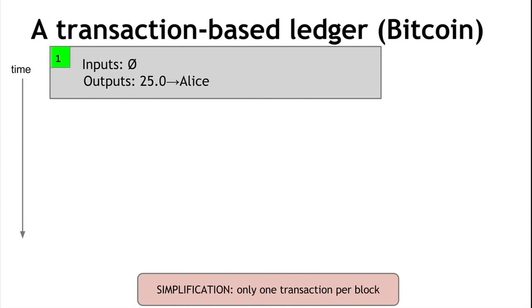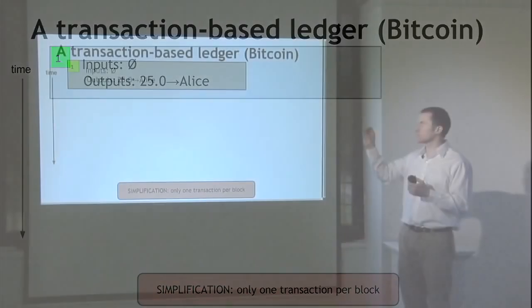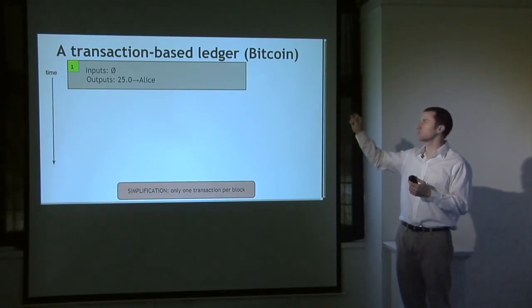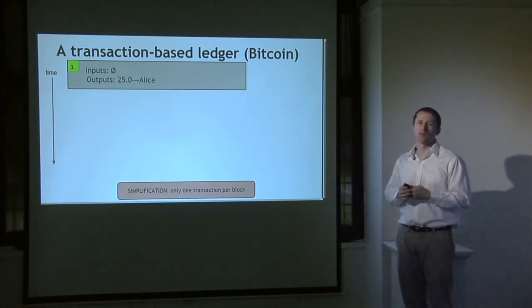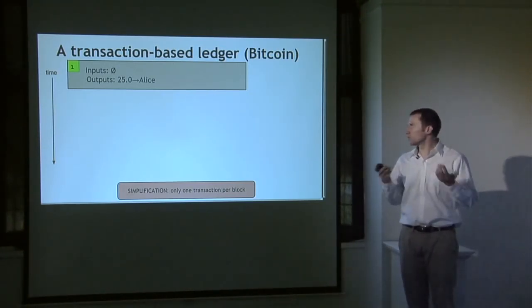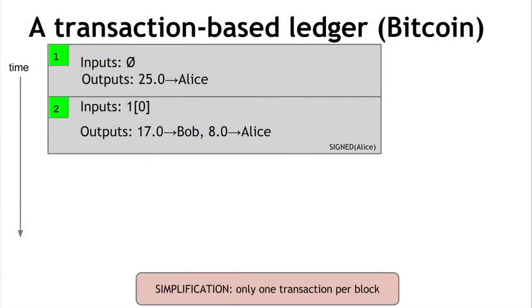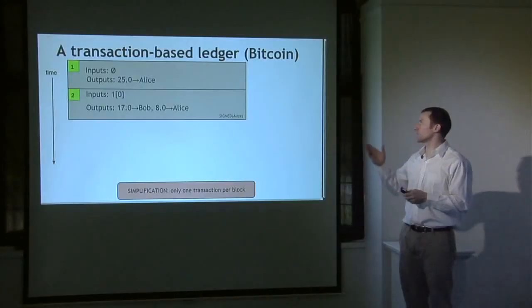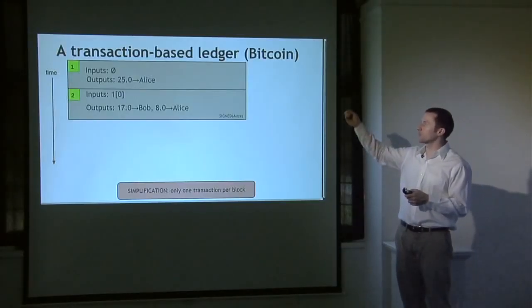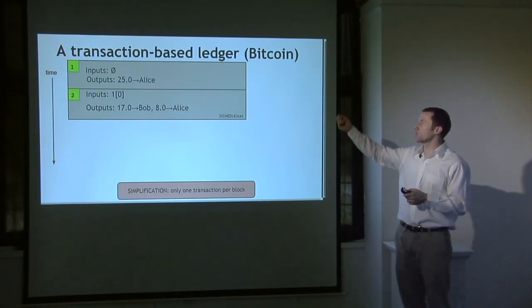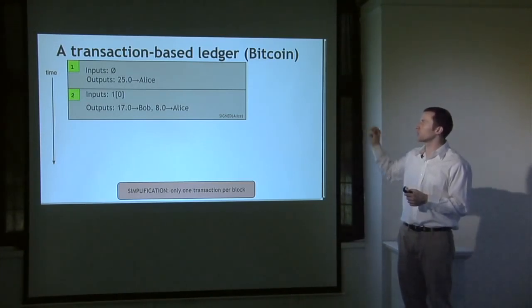Instead, Bitcoin uses a ledger that just keeps track of transactions — a transaction-based ledger. Transactions explicitly specify a number of inputs and a number of outputs, and each transaction has a unique identifier. We start with transaction 1, which has no inputs because this is new currency being created, and an output of 25 coins going to Alice. Since this is new coin creation, no signature is required. When Alice wants to send some coins to Bob, she has to explicitly refer to the previous transaction — so the input is output index 0 from transaction 1, which assigned 25 bitcoins to Alice.